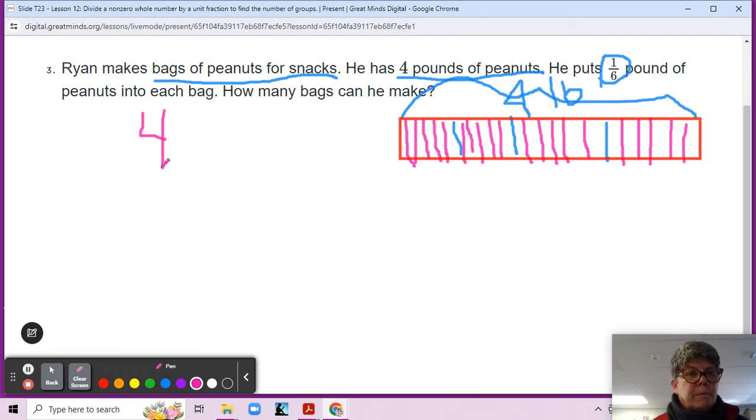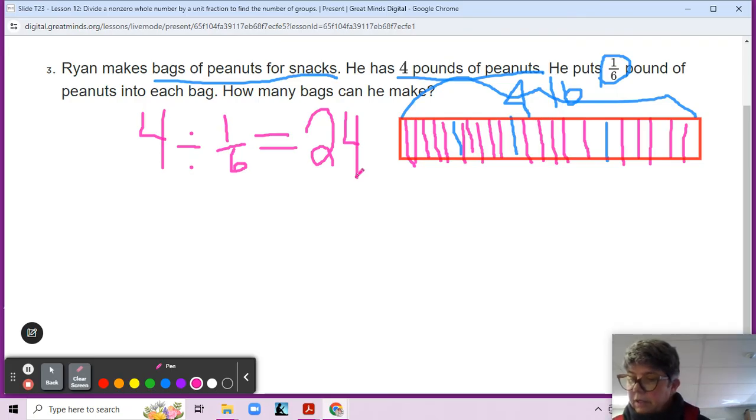Okay. So let's see. Four pounds divided into sixths. That would be how many sixths, how many one sixths are in four pounds. And like we said, there are 24. So he can make 24 bags. Make sure you write that as a sentence. Four divided by one sixth is 24. Thank you for your kind attention and your hard work. If you have any questions, of course, come and see me. Aloha.